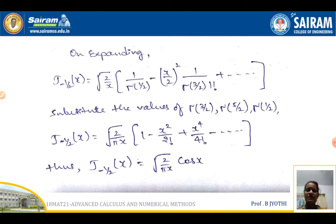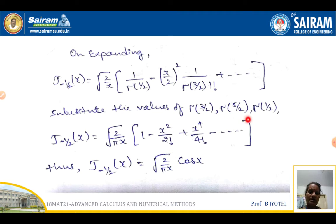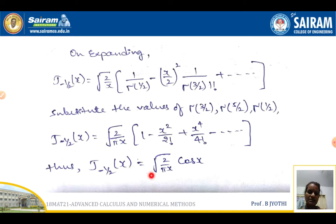On expansion we get J₋₁/₂(x) = √(2/x) · [1/Γ(1/2) − (x/2)² · 1/(Γ(3/2) · 1!) + etc.]. Substituting the values of Γ(3/2), Γ(5/2), and Γ(1/2), we get J₋₁/₂(x) = √(2/πx) · [1 − x²/2! + x⁴/4! − etc.]. Thus J₋₁/₂(x) = √(2/πx) · cos(x).